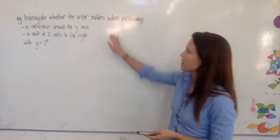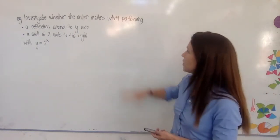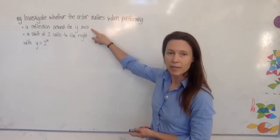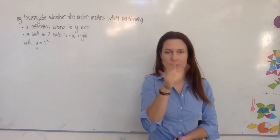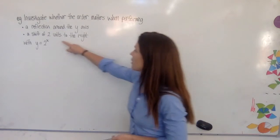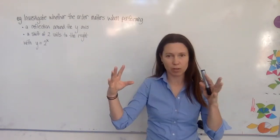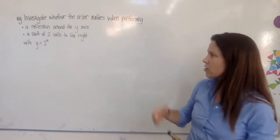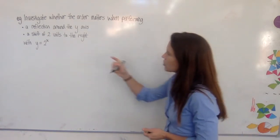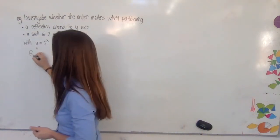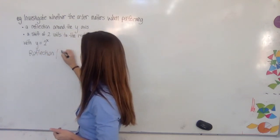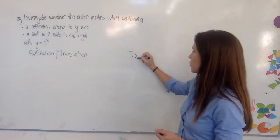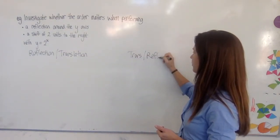Let's investigate whether the order really does matter when we perform these two operations: a reflection around the y-axis — which is horizontal — and a shift of two units to the right, which is also horizontal. By the rules, the order should matter here, and I'm expecting it to matter. Let's first perform the reflection and then the translation, and then we'll do it the other way around — translation first, then reflection.